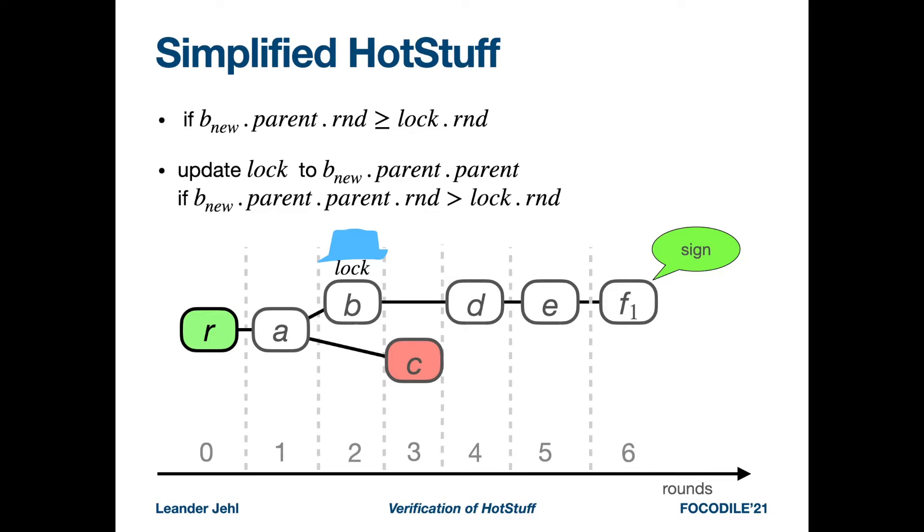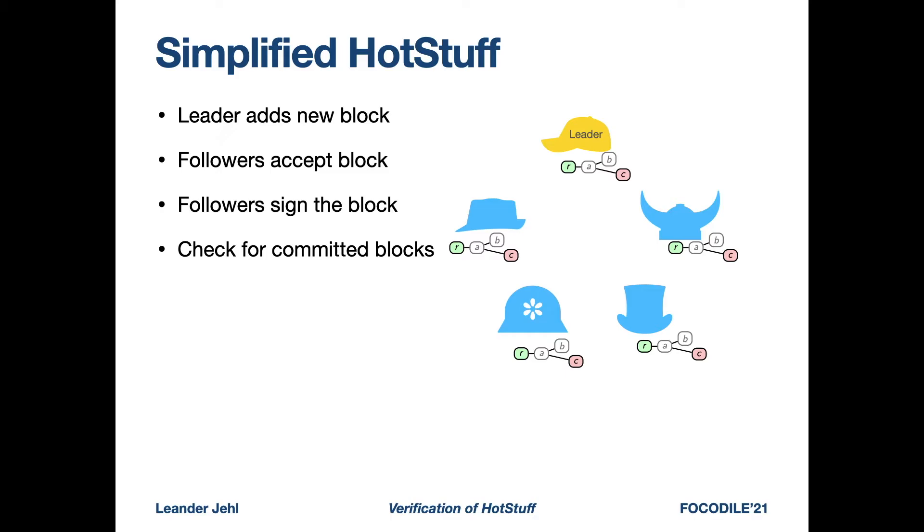Now assume our process signed F1. The grandparent of F1 is D. D has a higher round than our current lock, so the lock is updated.